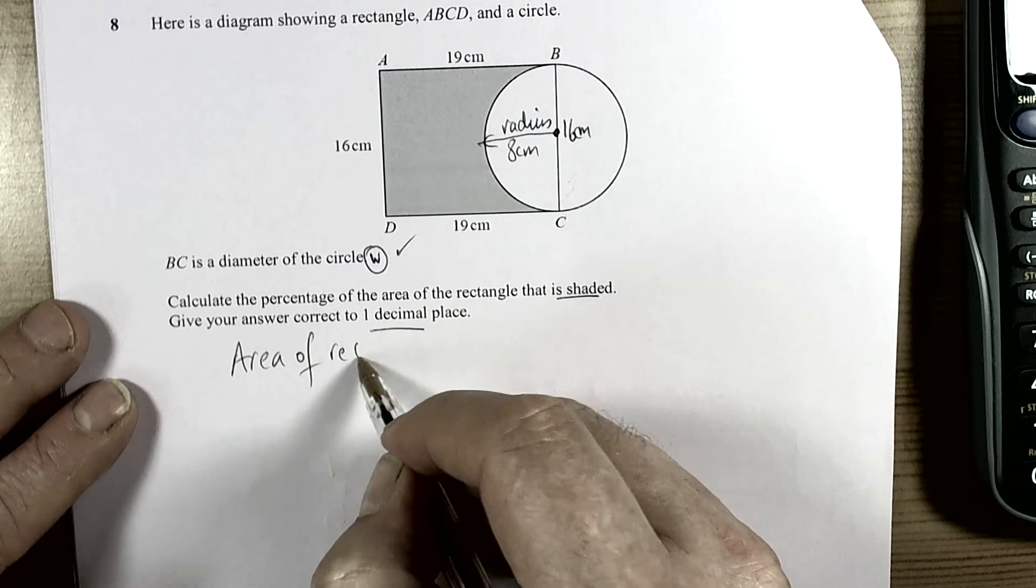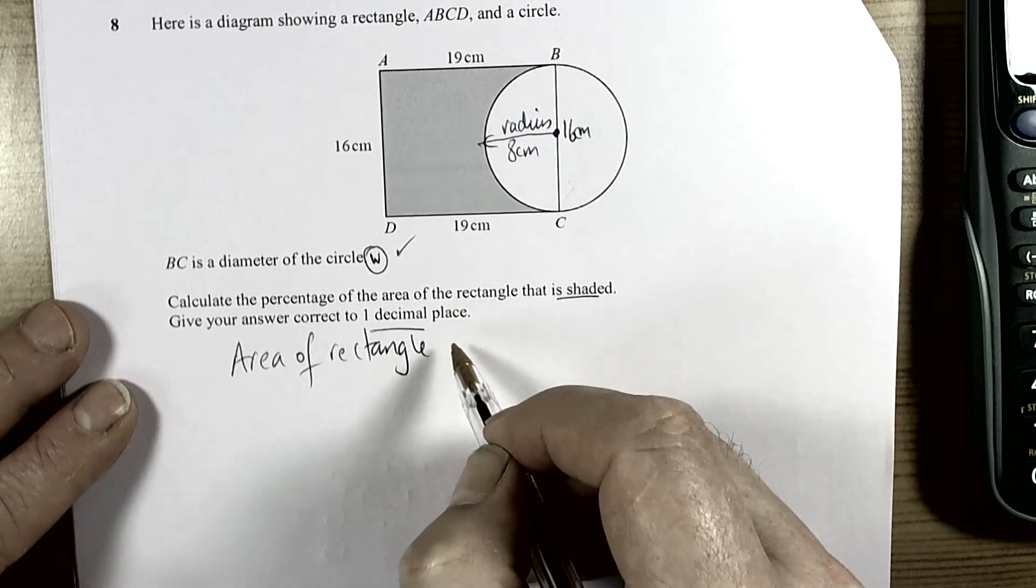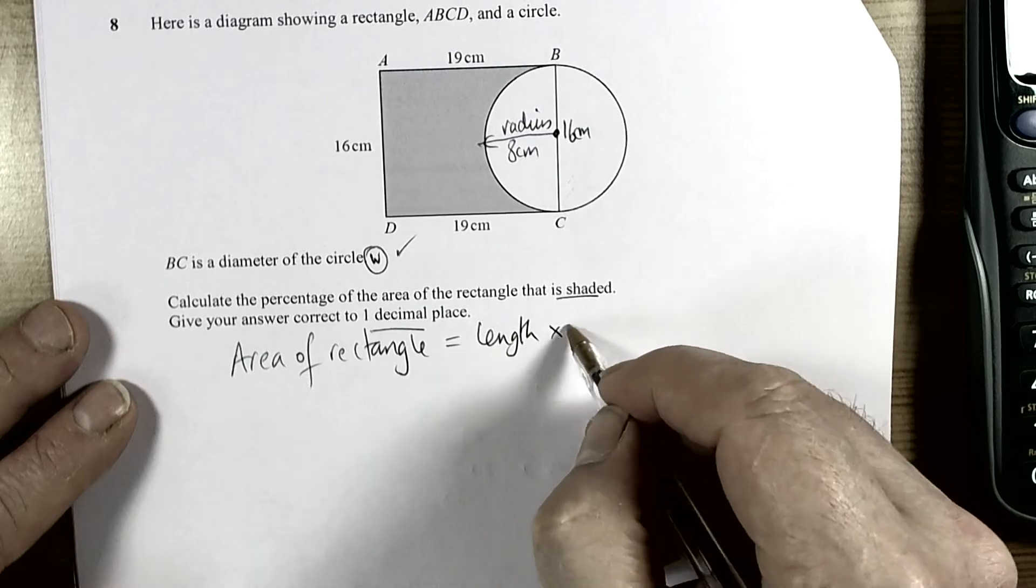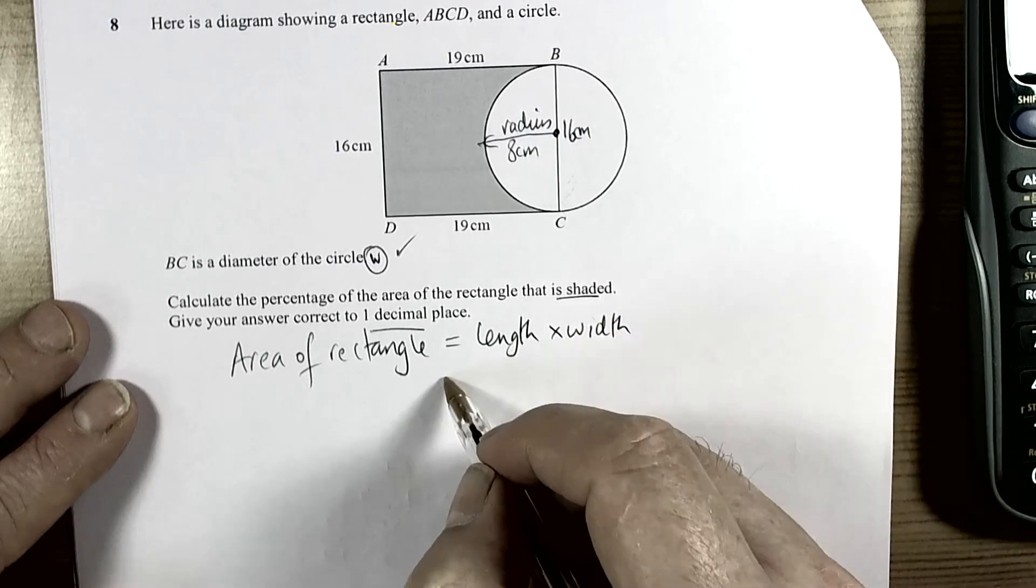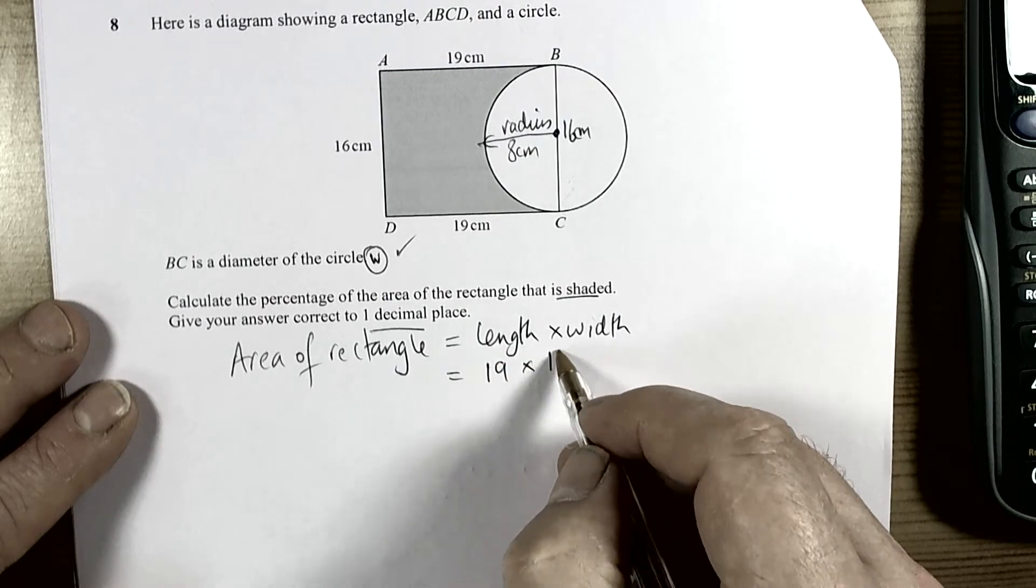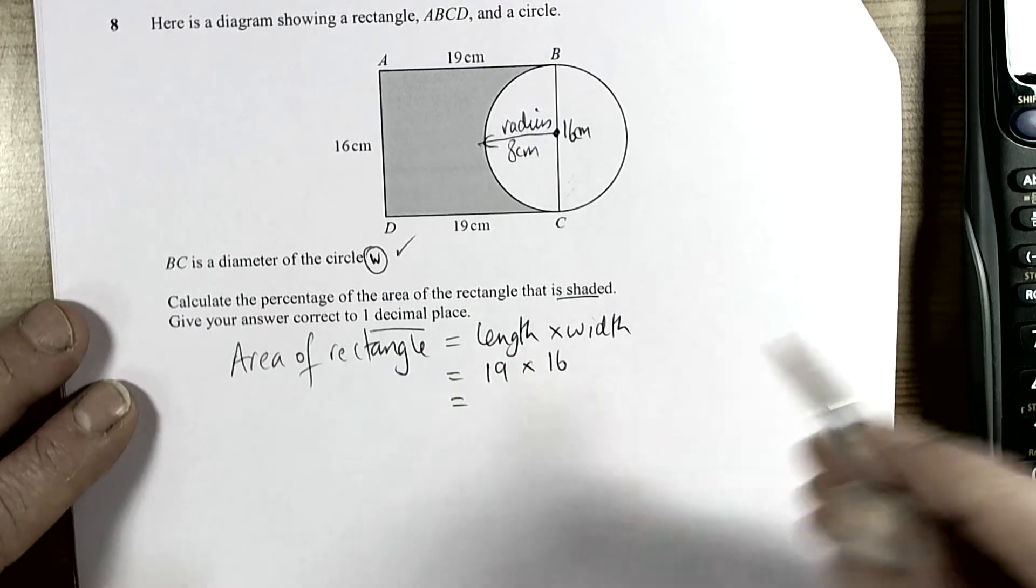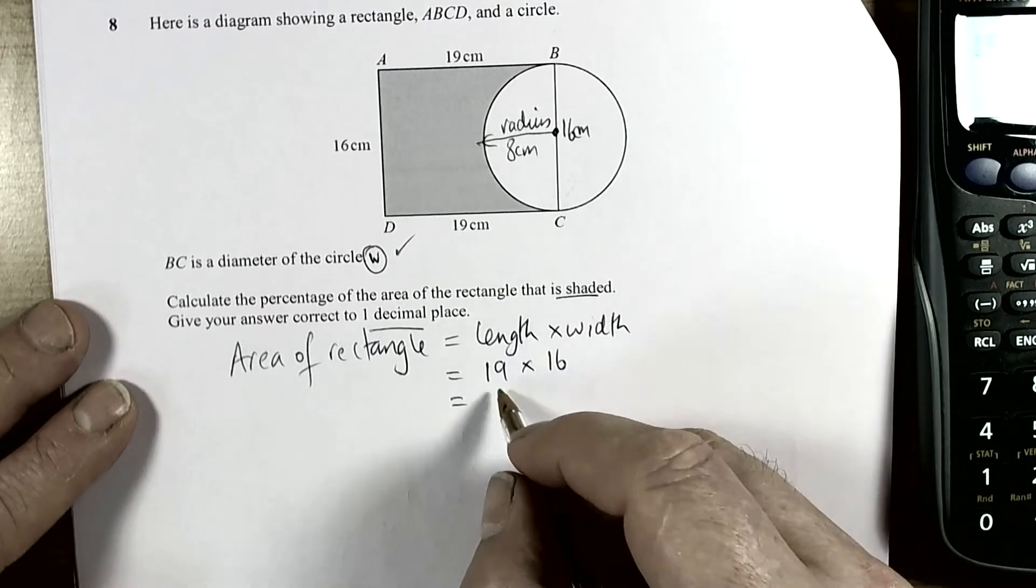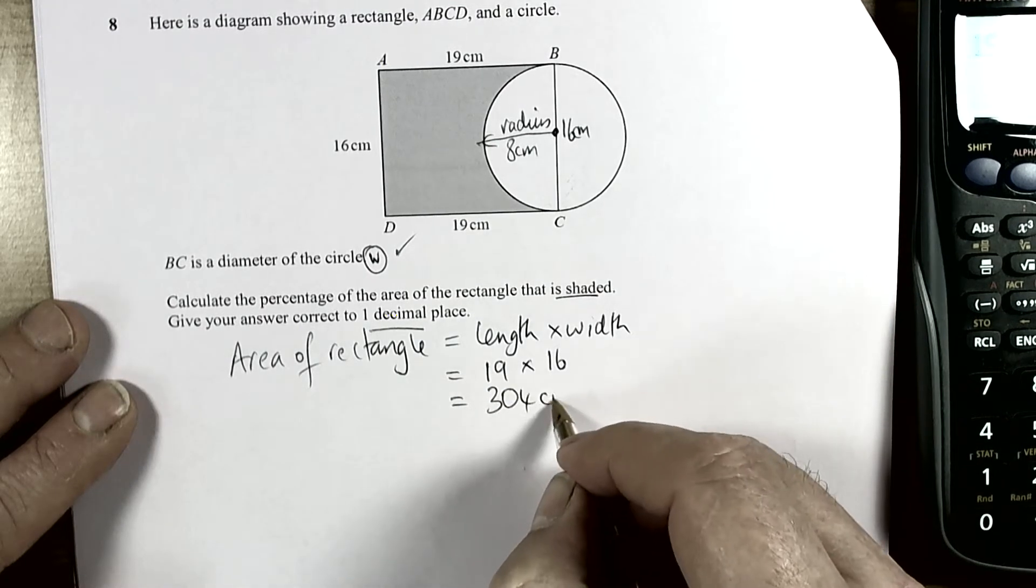So area of rectangle - tell the examiners what you're doing, so write down some information. Length times width, or length times height, depends on how you like to use the formula. So the length is 19, the width was 16, so that gave us a total area of 19 times 16 equals 304 square centimeters.